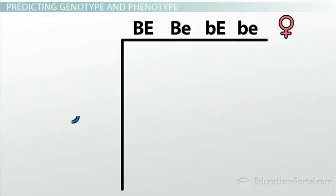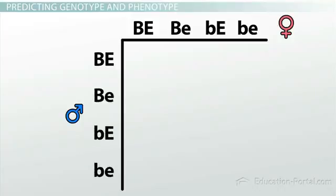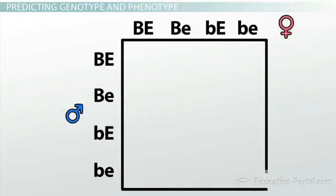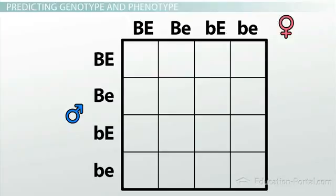All right, and the father is heterozygous at the same genes, so let's write those same gametes down for the father as well. Now we need to draw our Punnett square box, so let's do that. And now let's draw in the boxes to represent all of the different progeny. All right, so we have 16 different boxes here in our Punnett square, meaning that there are 16 different genotypes that this cross can produce.